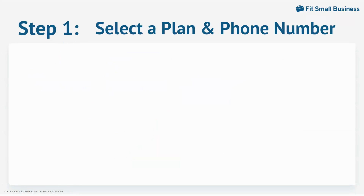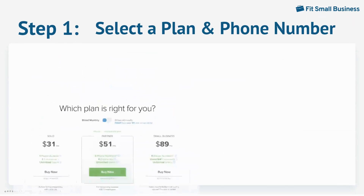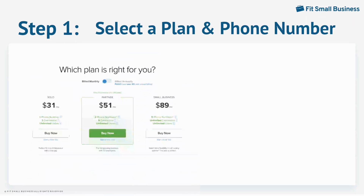Using Grasshopper begins with the selection of a plan. Head over to the sign-up page and choose a subscription plan. Grasshopper offers three plans with a flat monthly fee. Plans have the same features regardless of the number of users, and packages vary in the number of phone numbers and extensions.